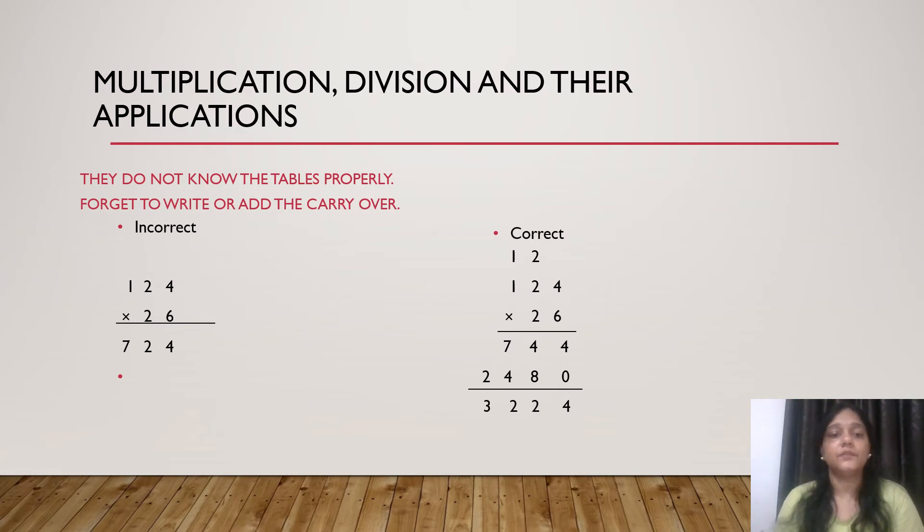Let us take one example. 124, we have to multiply it with 26. They write six fours are 24. And they forget to write two carry over here. And they simply do six twos are 12. And here they write two. They forget to add carry over. Six twos are 12. 12 plus 2 is 14. Likewise, they have to multiply the numbers.